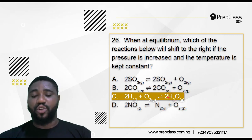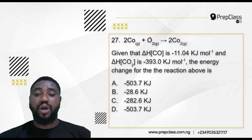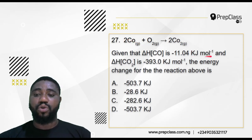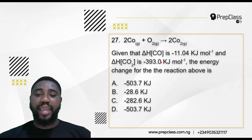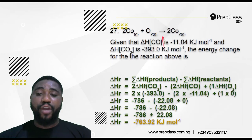Question 27: Carbon reacting with oxygen gives carbon dioxide, and this reaction also gives CO₂ with a heat of reaction Delta H. The heat of formation of CO₂ is minus 393.5 kJ/mol and the heat of formation of CO is minus 110.4 kJ/mol. The question asks for the energy change for the combustion reaction. The options are: minus 53.7, minus 28.6, minus 282.6, or minus 53.7 kJ/mol.